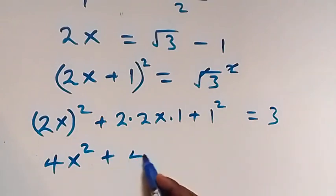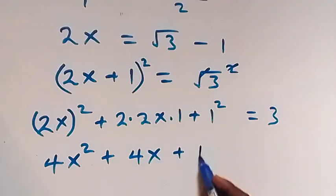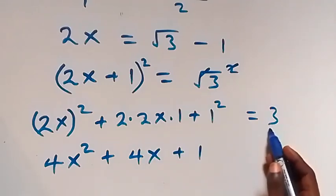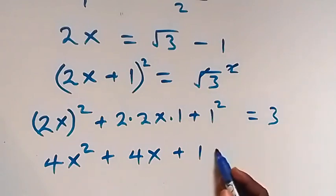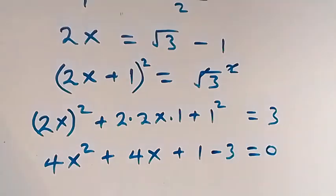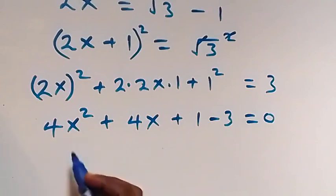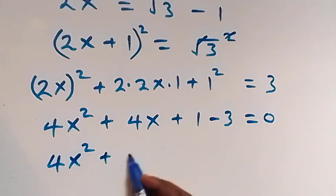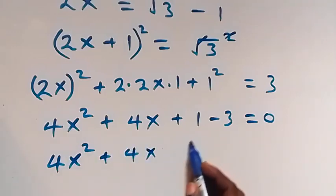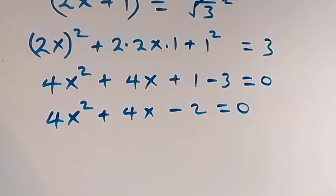This equals 3. The square gives us 4x² plus 4x plus 1 equals 3. Taking 3 to the left side becomes minus 3, so we have 4x² plus 4x minus 2 equals 0.